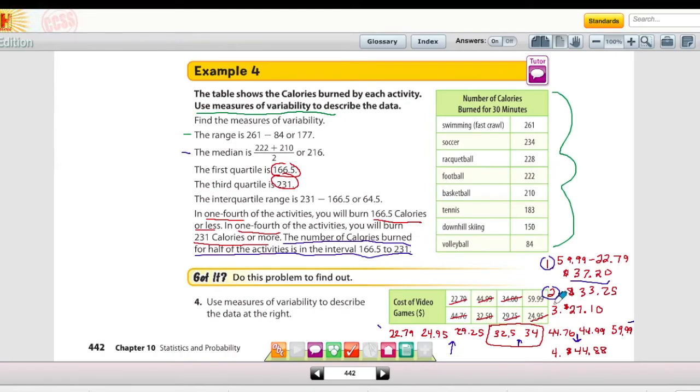Number three, the first quartile is taking everything to the left of the median. And then right here, that blue arrow there, what's between 24.95 and 29.25? Well, it's 27.10.